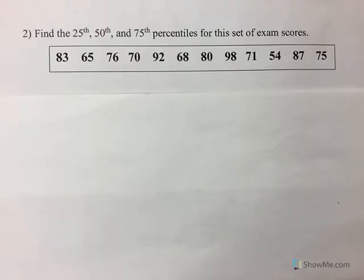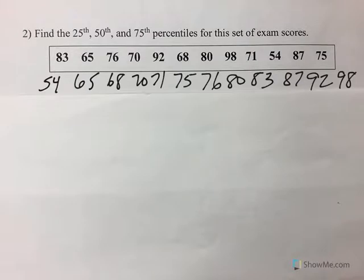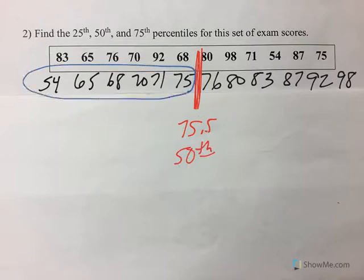Once they're in order least to greatest, then we can find our median. Now you'll notice in this one we have an even number, so when I have an even number my median chops between two. If I add those together and divide by two, I end up with 75.5 for my 50th percentile. Then I find the median of the front half and it cuts between these two, so 69 is my 25th percentile.